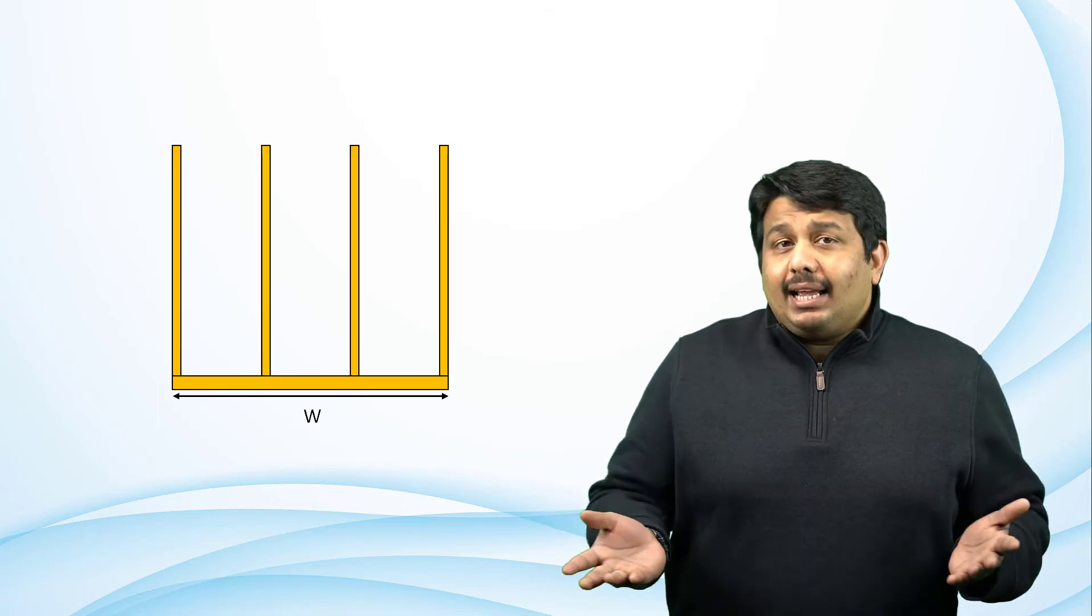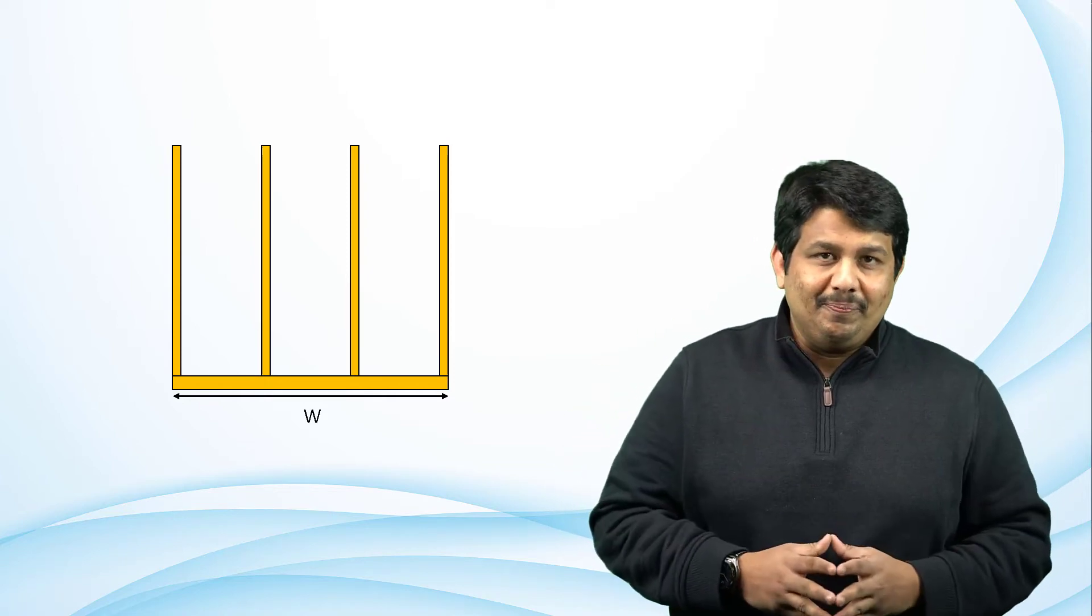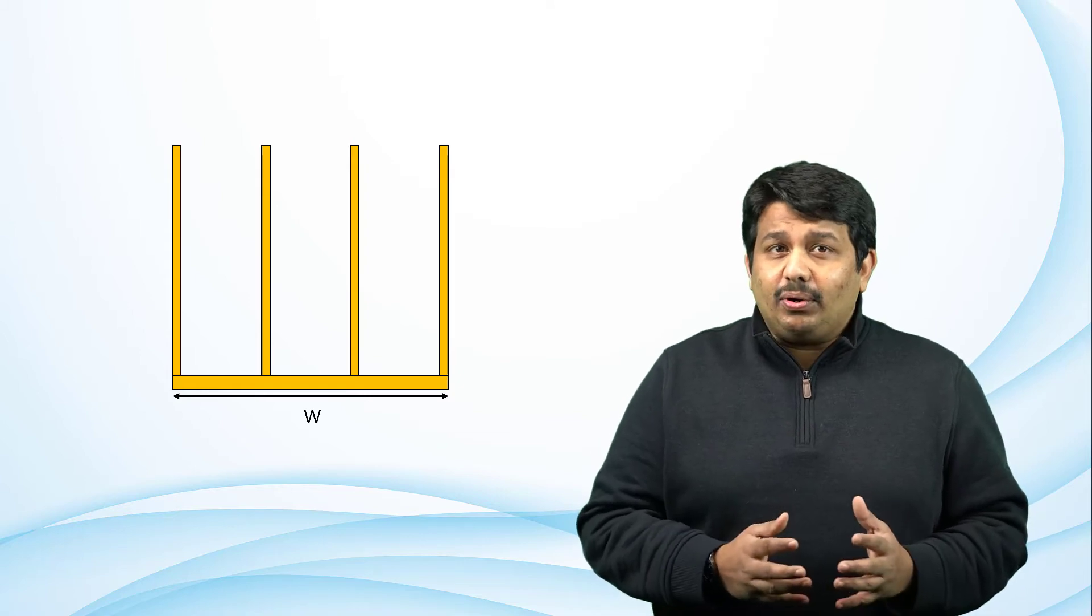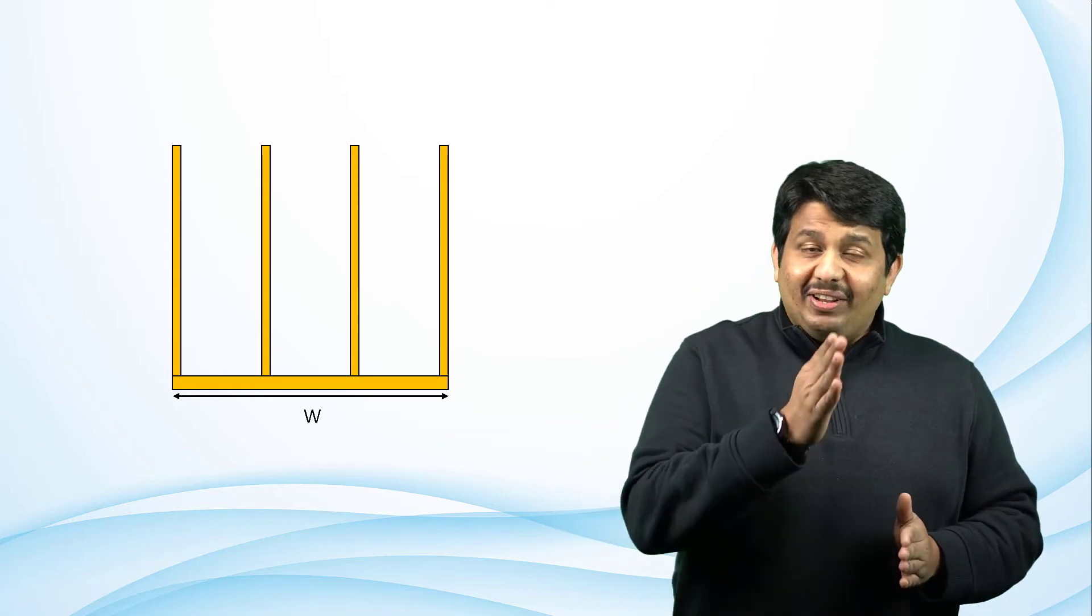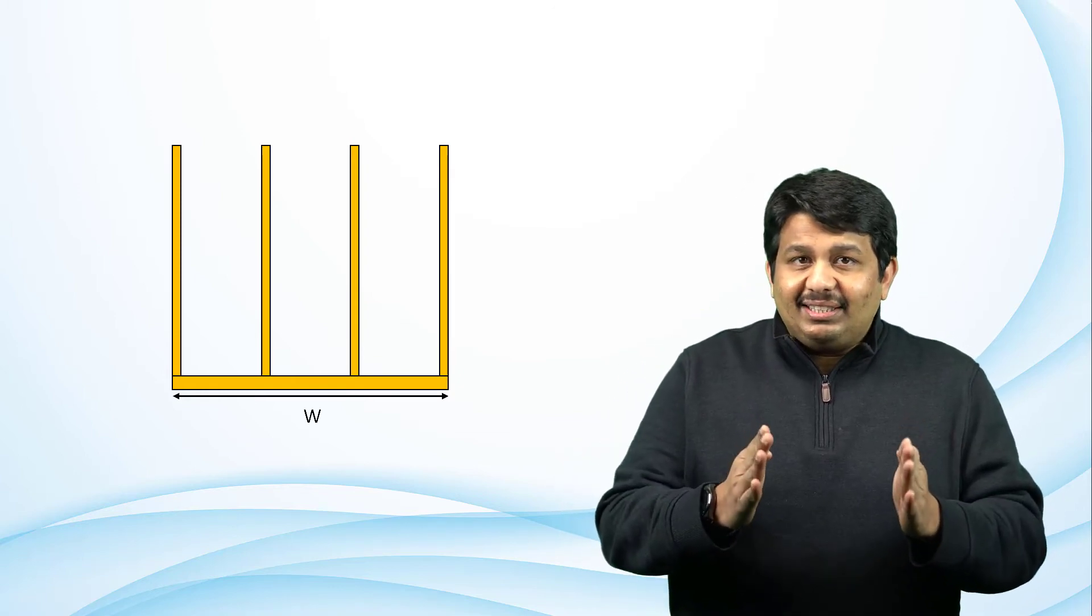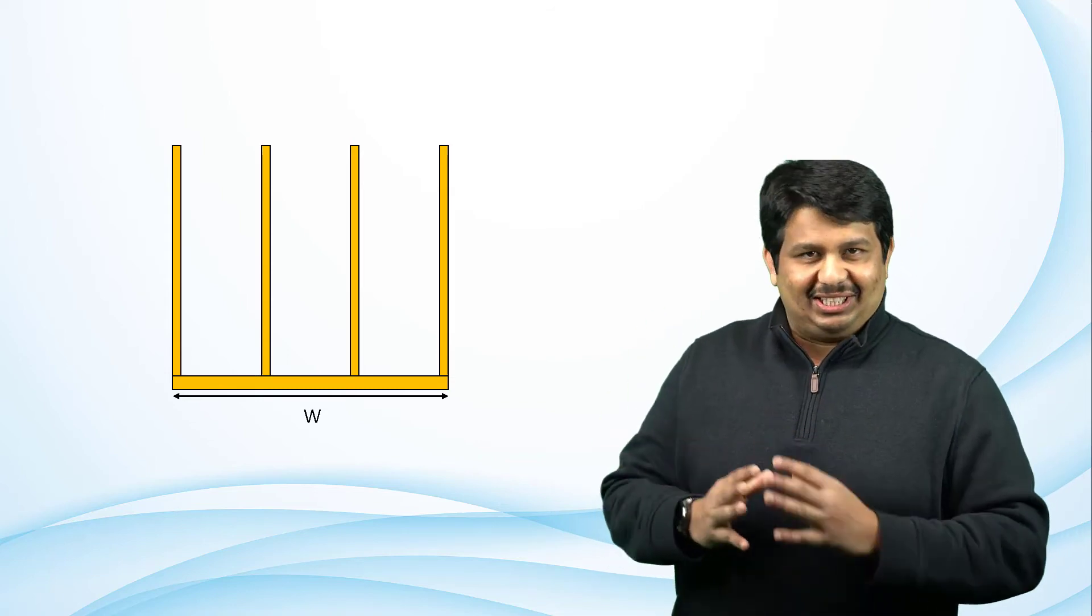Let us assume that the fins of a heatsink can be represented by an array of vertical parallel plates over a fixed width W. The fluid flow driven by buoyancy forces must overcome the viscous forces due to the fins. The mass flow rate between two adjacent fins is in fact a balance between the buoyancy and the viscous forces.